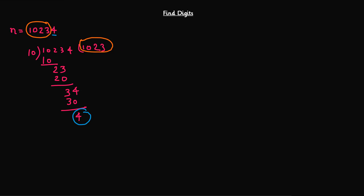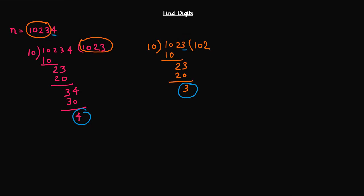Suppose you take 1023 as a dividend and divide it by 10. It goes once, giving quotient 102 and remainder 3. So 3 is the last digit extracted. Then 102 becomes your new dividend. You keep doing this until the dividend reaches 0. Every iteration you get the last digit via the remainder, and the quotient becomes the new number. This is the idea we are going to use to extract each digit.